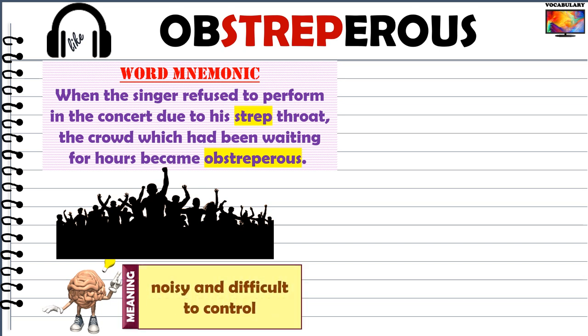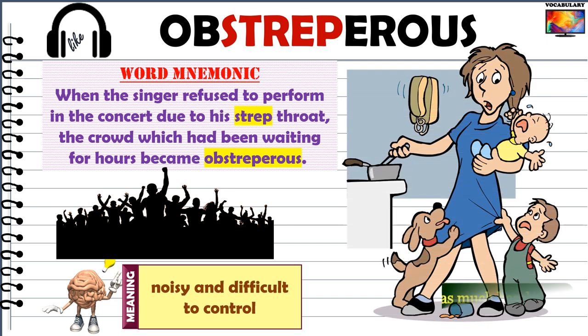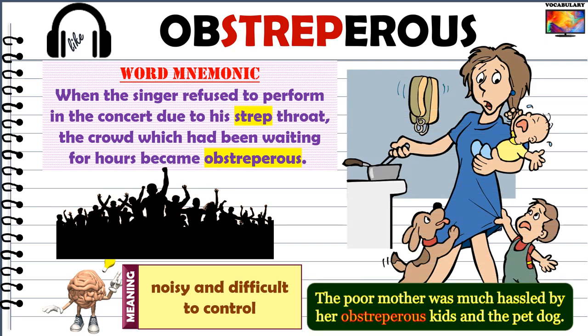Another image for this word is that of an abstreperous or unruly kid, or even a pet, when they are crying and screaming at the top of their lungs — especially when their mom is in the middle of some important work. Abstreperous is the perfect word for such kids. The poor mother was much hassled by her abstreperous kids and the pet dog.